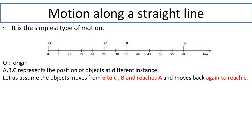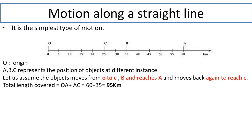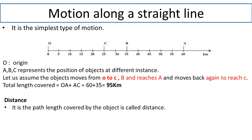The object moves from O to A, and then moves back and reaches C. So in this total journey, the path length covered is equal to O to A plus A to C. O to A distance is around 60 kilometers, and A to C distance is 35 kilometers. So the total path length covered will be 95 kilometers.